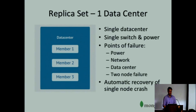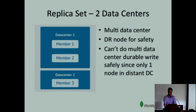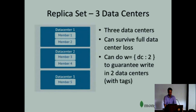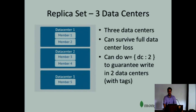If we just have one data center, we're pretty vulnerable — a top-of-rack switch failure or power network issue can bring the whole thing down. You really want to move at least one of your members to a physically isolated data center. Ideally you want five nodes so you can guarantee writes to two data centers. There's a facility in how writes are managed where you can specify which tags are to be written to — you can issue a write and say you want machines tagged in a certain way — and use those tags to guarantee multi-data-center resiliency in your writes.